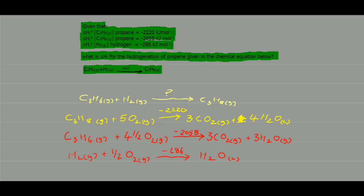We need to reorganise this data. The first thing to look at is that propane in the combustion equation is on the left-hand side, but in the equation we are trying to recreate it is on the right-hand side. So if I reverse that combustion equation and change the sign from minus 2220 to plus 2220, then propane will be on the right-hand side.